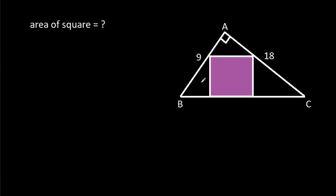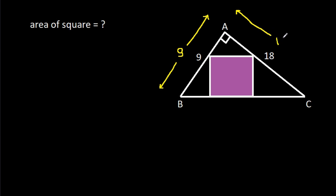In this video, we have been given a square inside a right angle triangle, where AB is 9 and AC is 18. We have to find the area of the square.